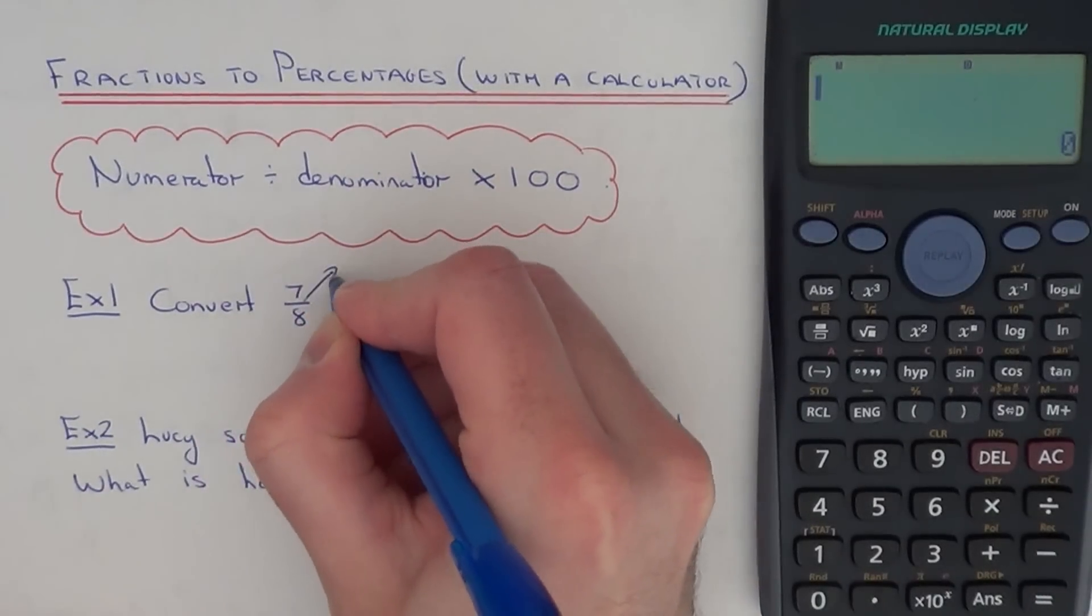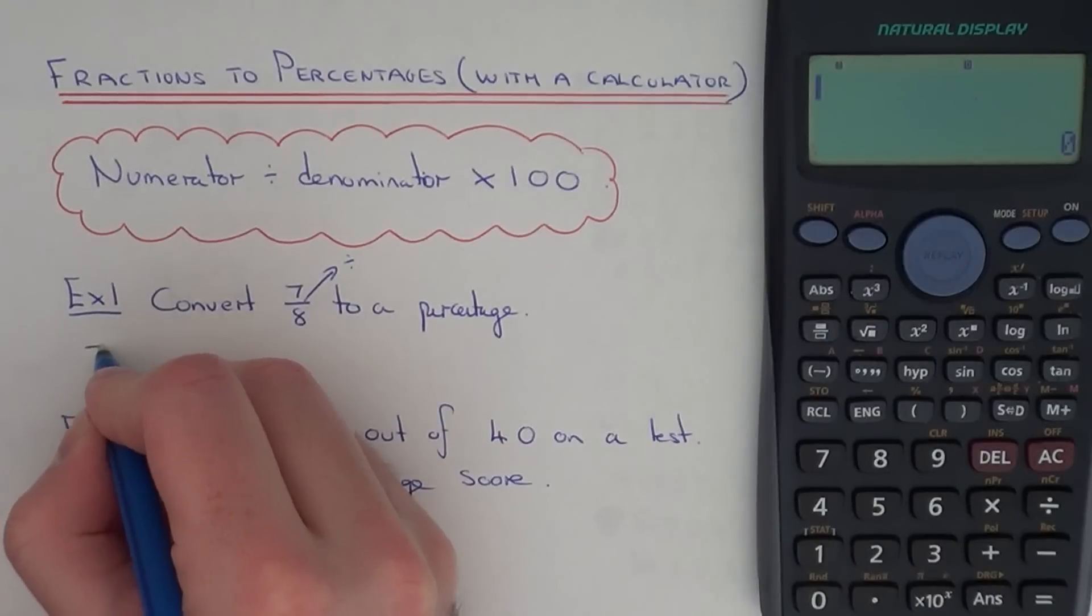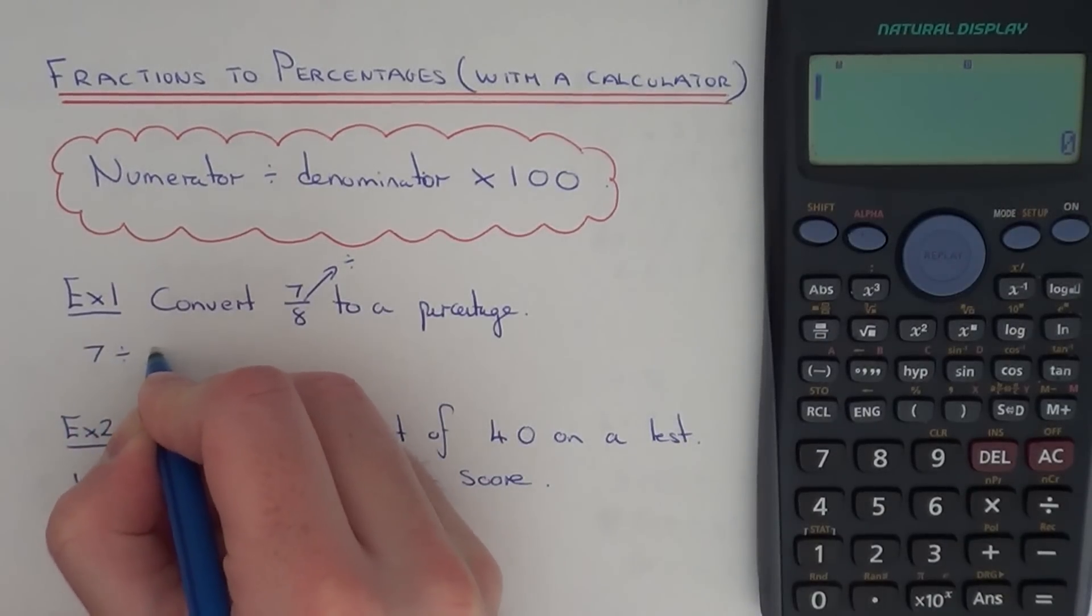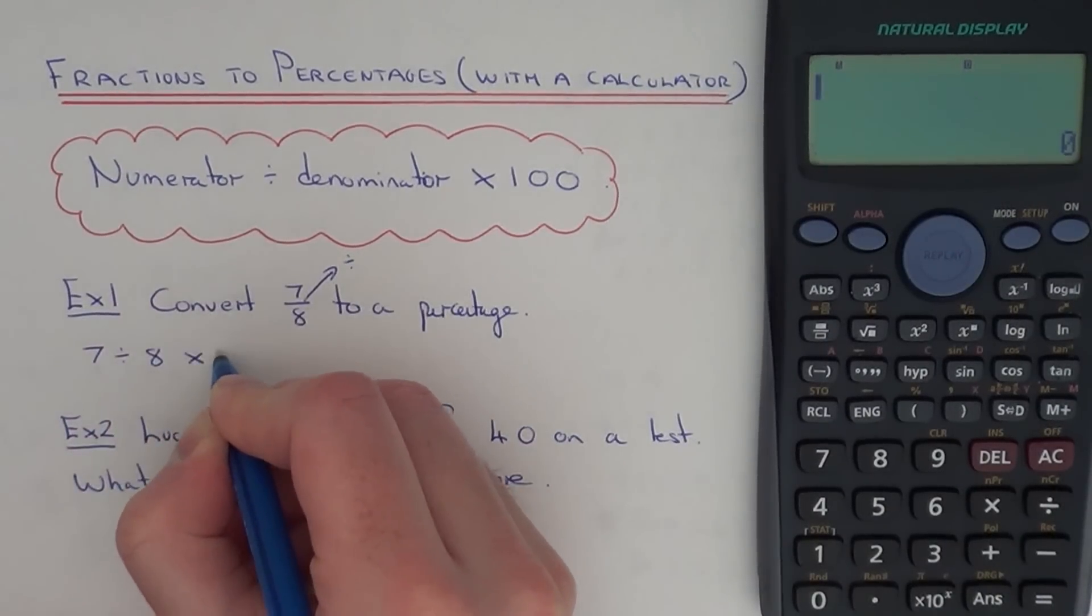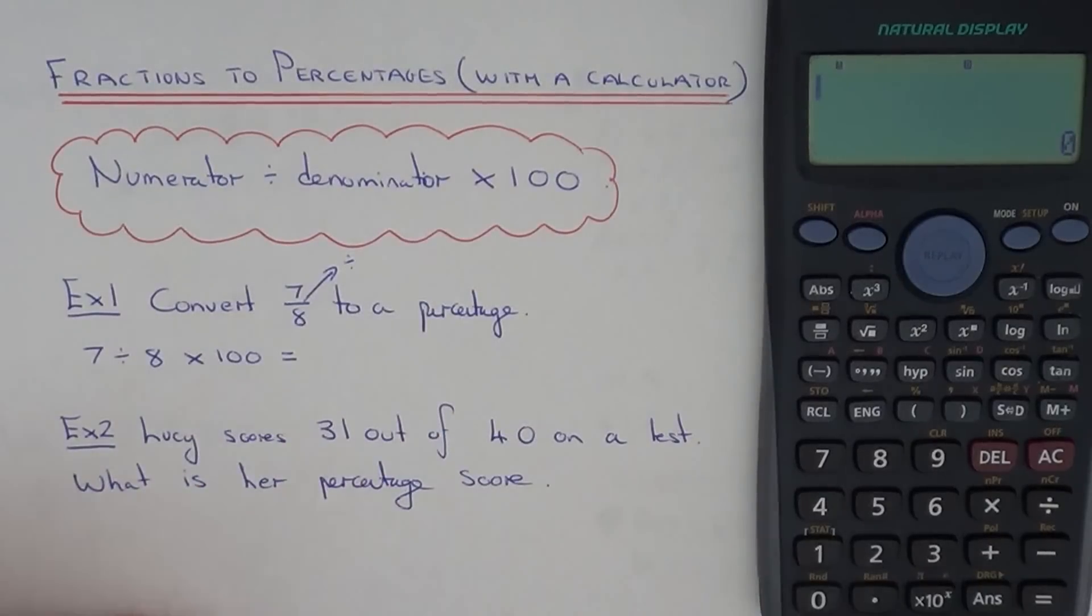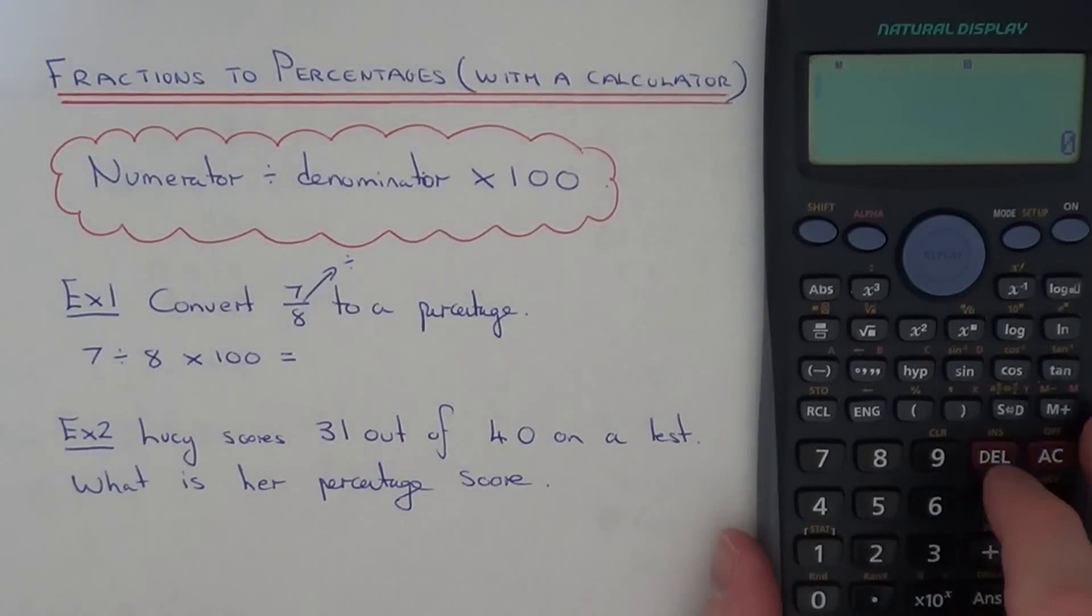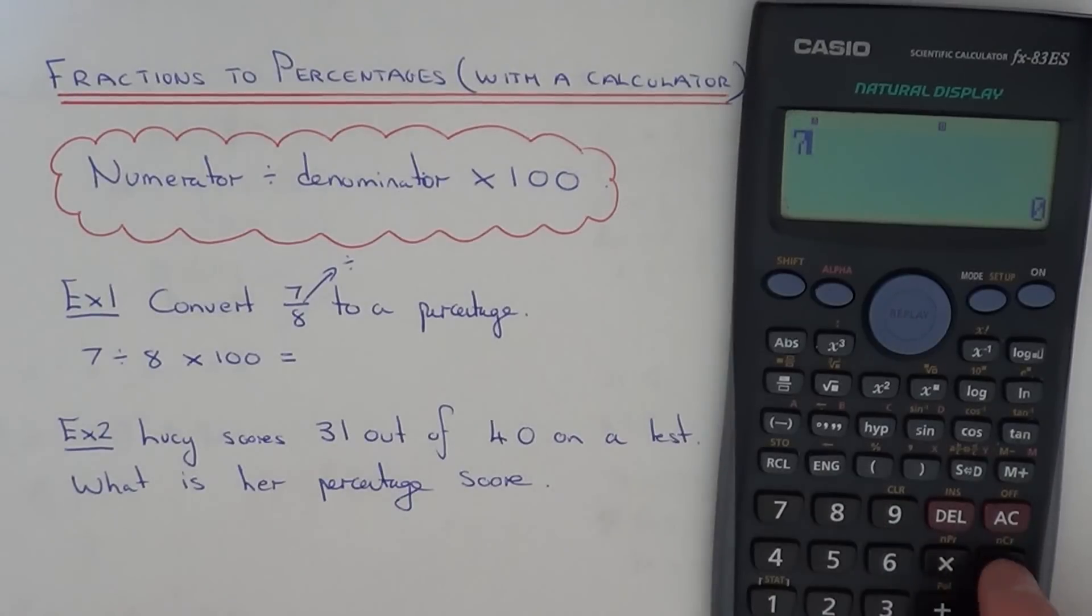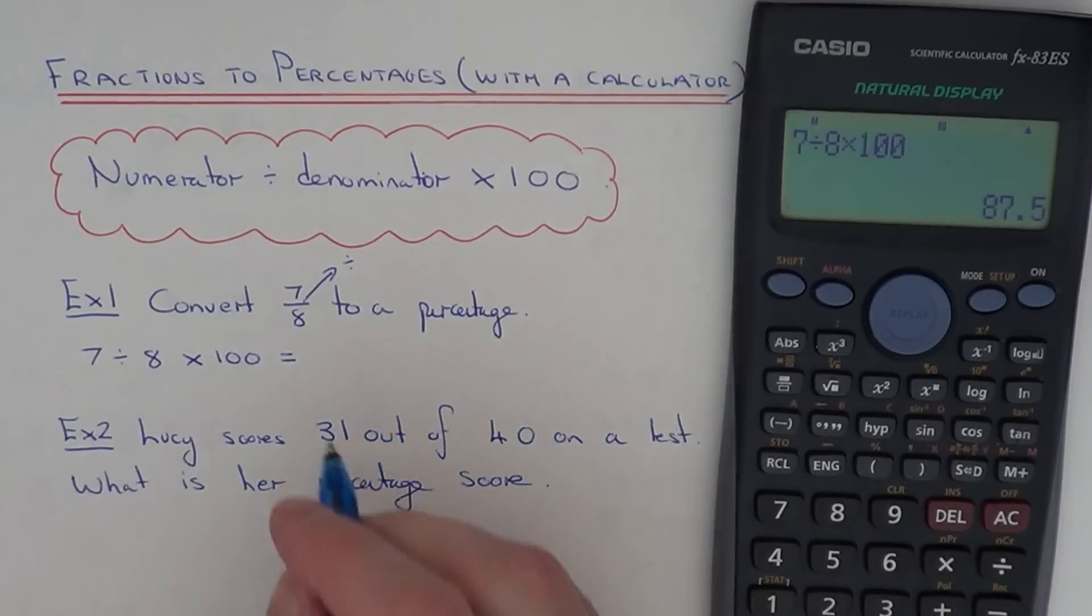So just remember that that line means divide. So we've just got to do 7 divided by 8 and then multiply this by 100. If you just get your calculator now and do 7 divided by 8 times 100, you get 87.5%.